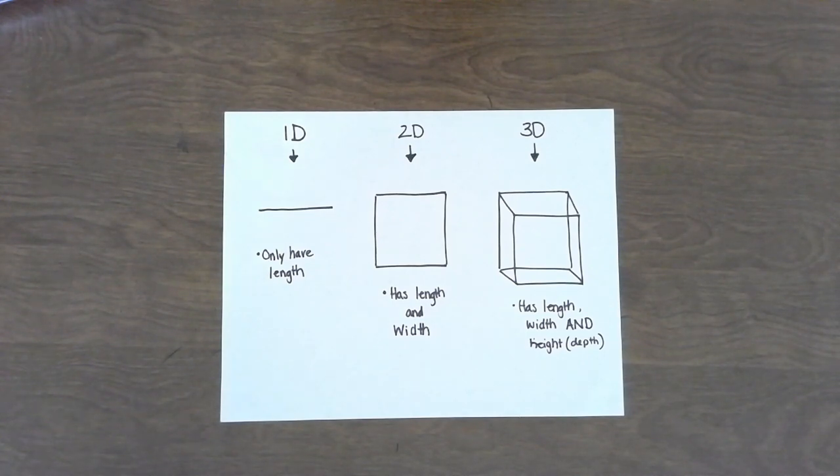The word dimension means the measurable size of something and often refers to width, length, and height.